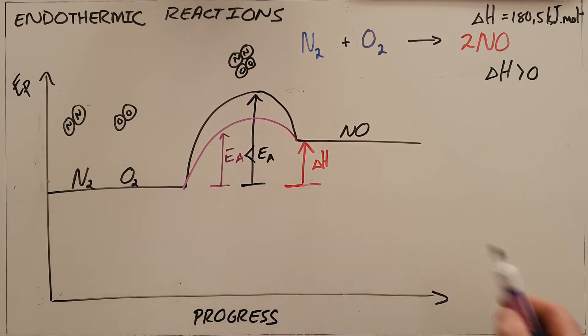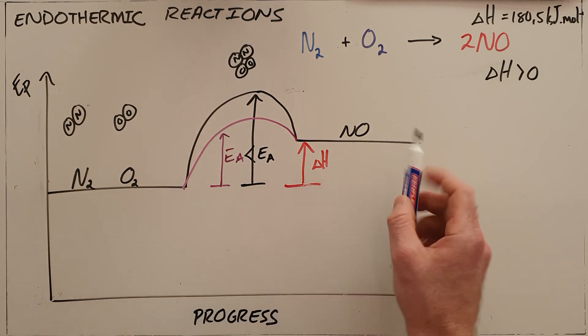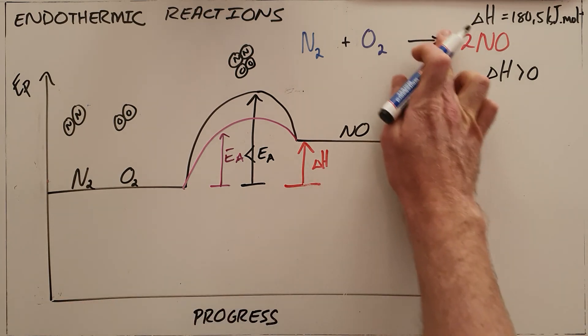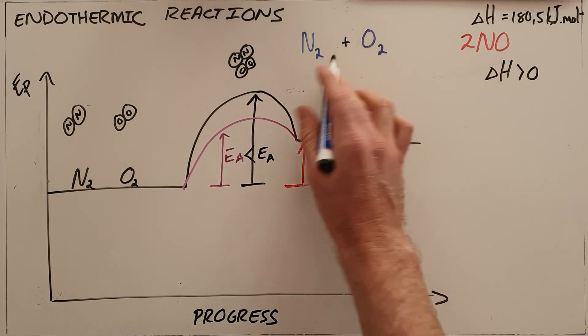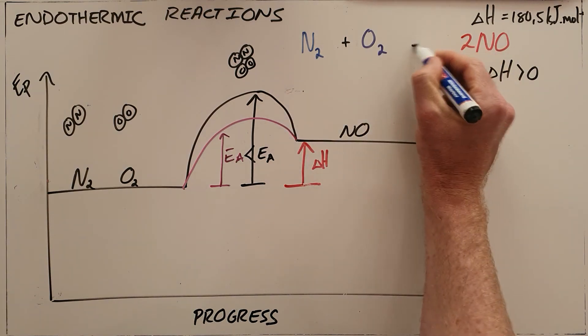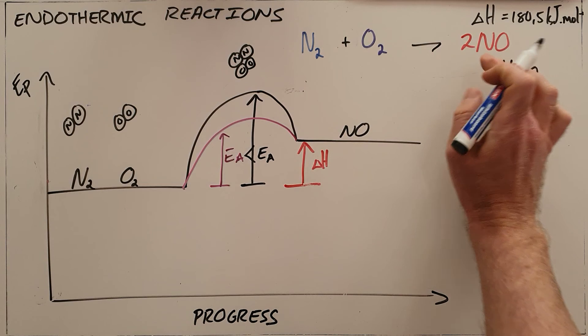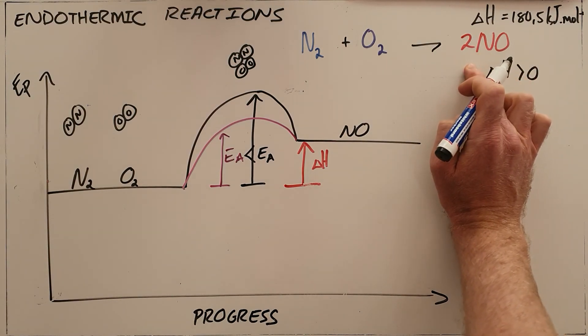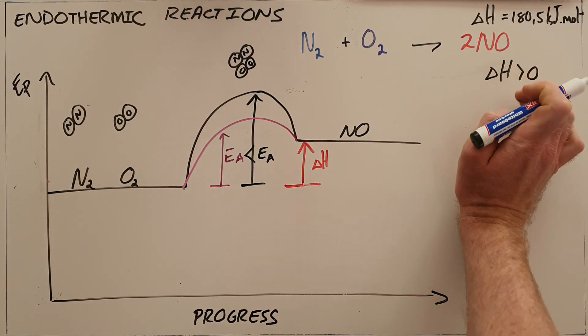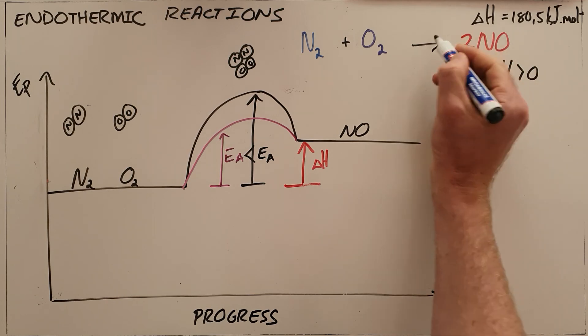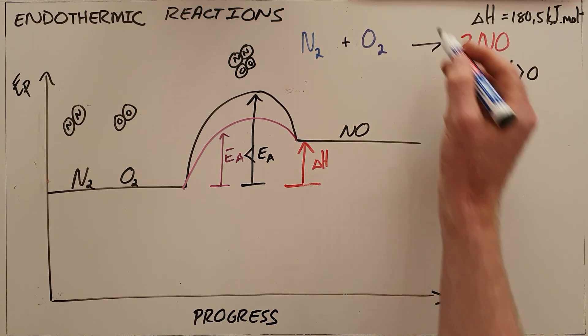We can also introduce the concept of a reversible reaction. Although the forward reaction here, where nitrogen reacts with oxygen to form nitrogen monoxide, is endothermic, the reverse reaction in which nitrogen monoxide breaks apart to form nitrogen and oxygen again would obviously then be exothermic.